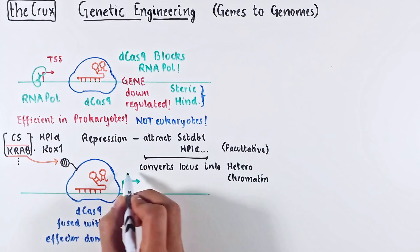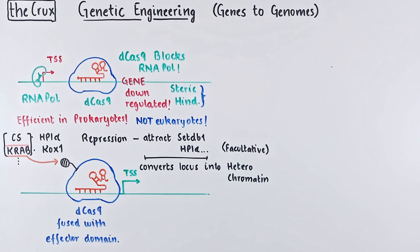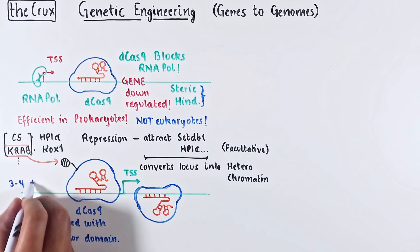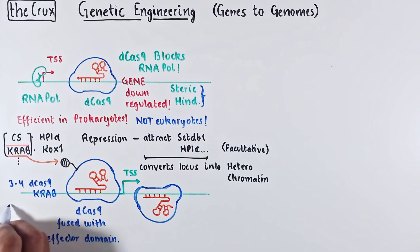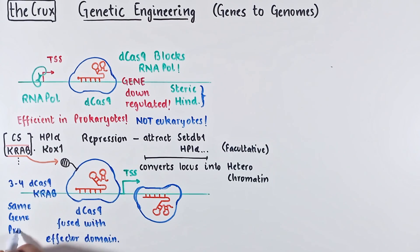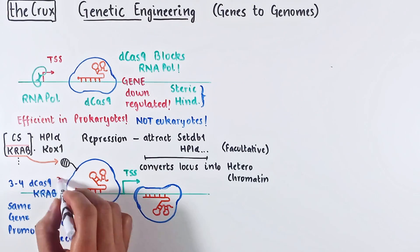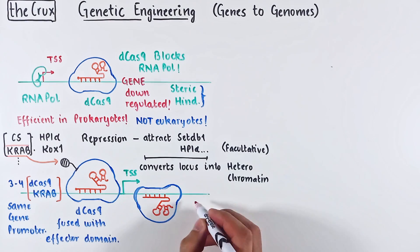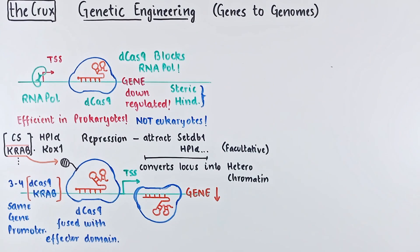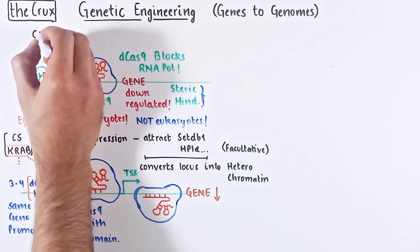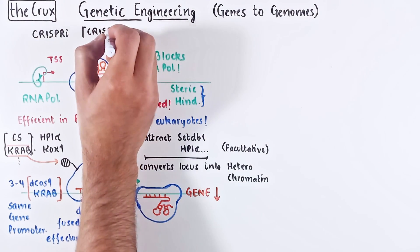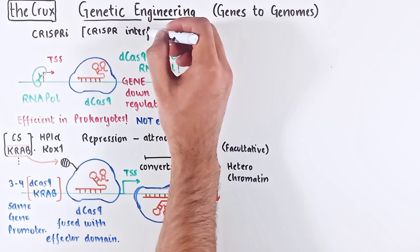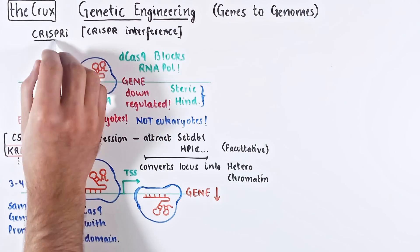In addition, you can also guide multiple dCas9s to the same gene promoter — usually 3 to 4 work pretty well. This dCas9 bringing the KRAB domain with itself at the promoter leads to the down-regulation of gene expression. The repression usage of dCas9 is referred to as CRISPR interference.